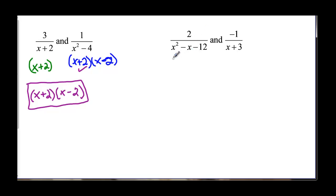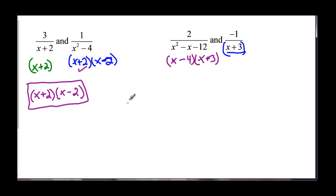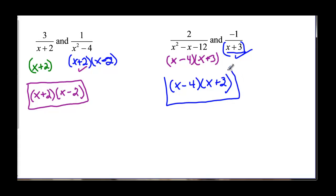One more example. We have to factor: factors of negative 12 that add up to negative 1 — that would be 3 and 4 with opposite signs. We want a negative answer, so it will be negative 4 and positive 3. Over here we just have x plus 3 as the denominator. So the least common denominator has x minus 4 and x plus 3. Looking at the second fraction, I've already listed that factor with the same exponent, so the LCD is x minus 4 times x plus 3.